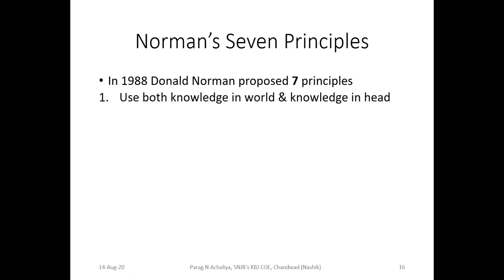The first principle says to use both knowledge in world and knowledge in head. Knowledge in world means generalized knowledge, and knowledge in head means whatever knowledge we personally have. We need to consider both things while interacting with any system, because the actual functionality of a system may be different from how we try to use it.